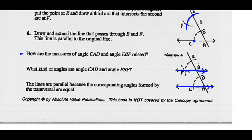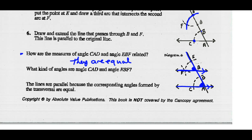How are the measures of angles CAD and EBF related? CAD is this angle here and EBF is this angle here — those two angles are equal. Why are they equal? What kind of angles are formed? CAD and EBF form the F pattern, so they're called corresponding angles.